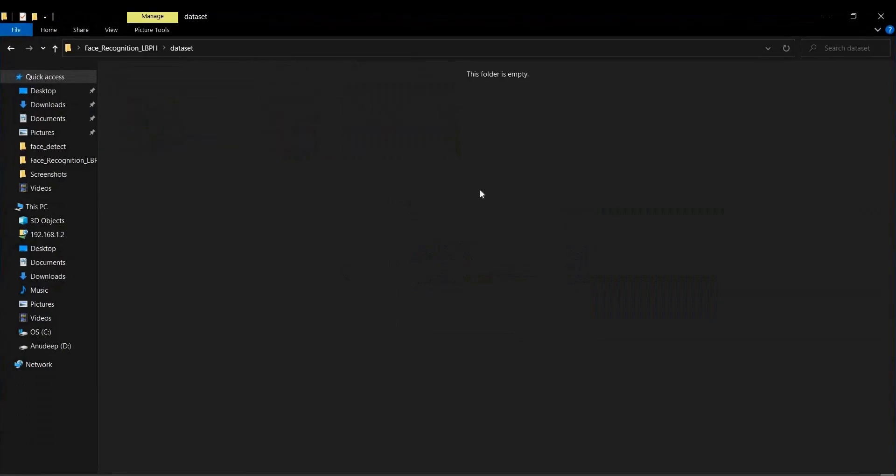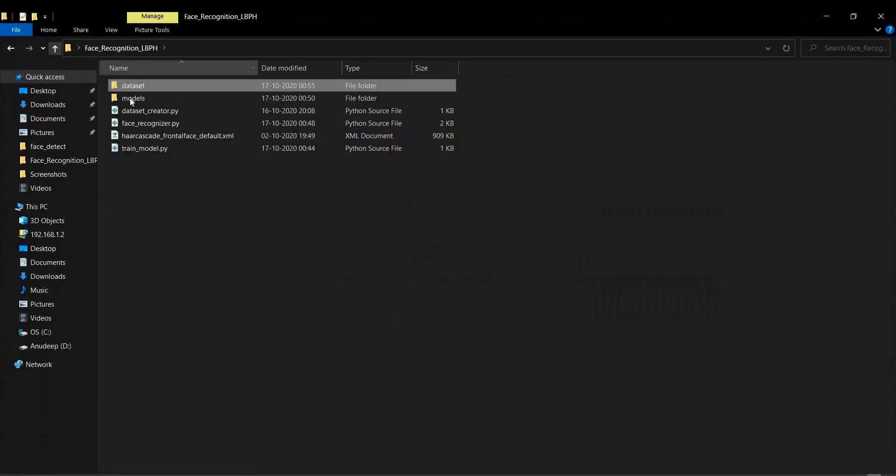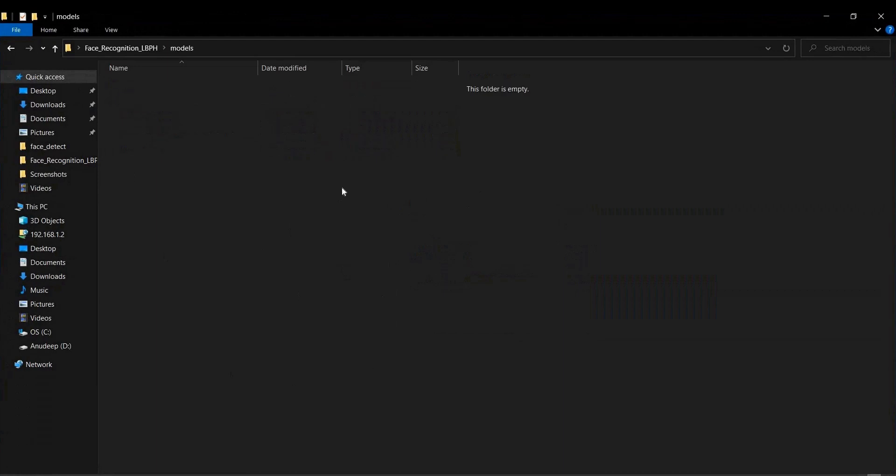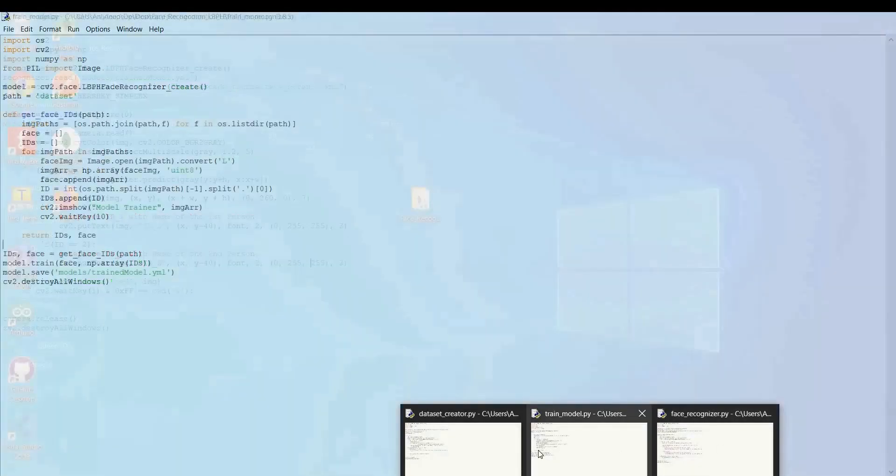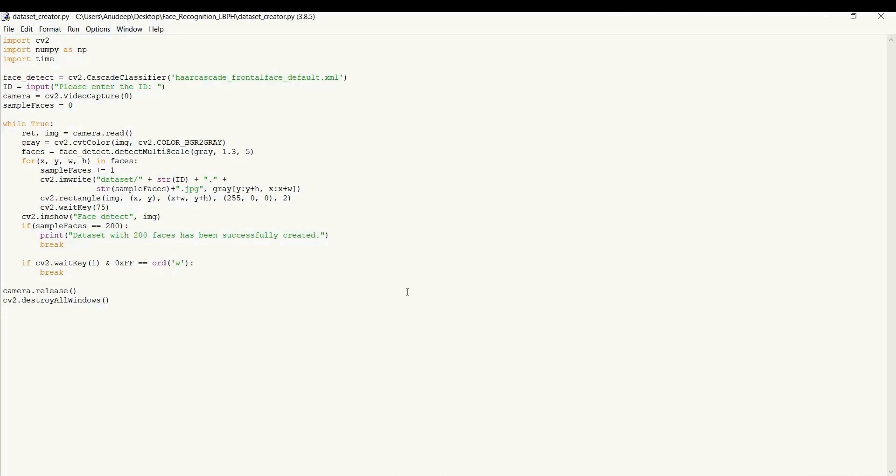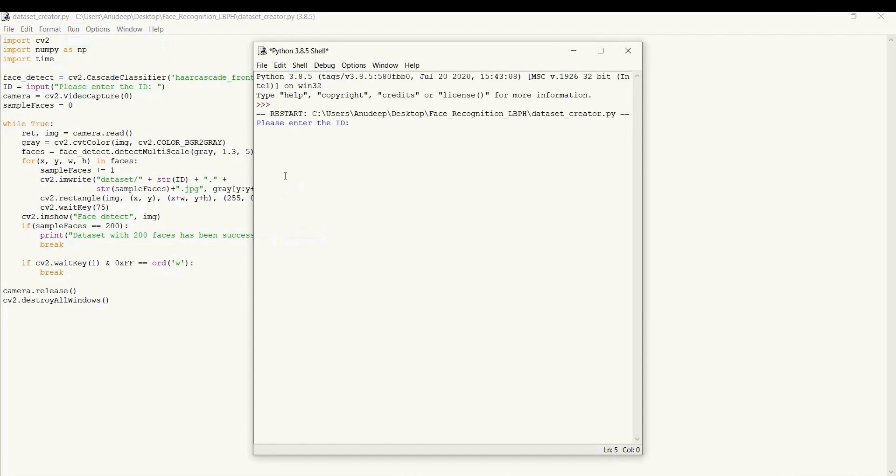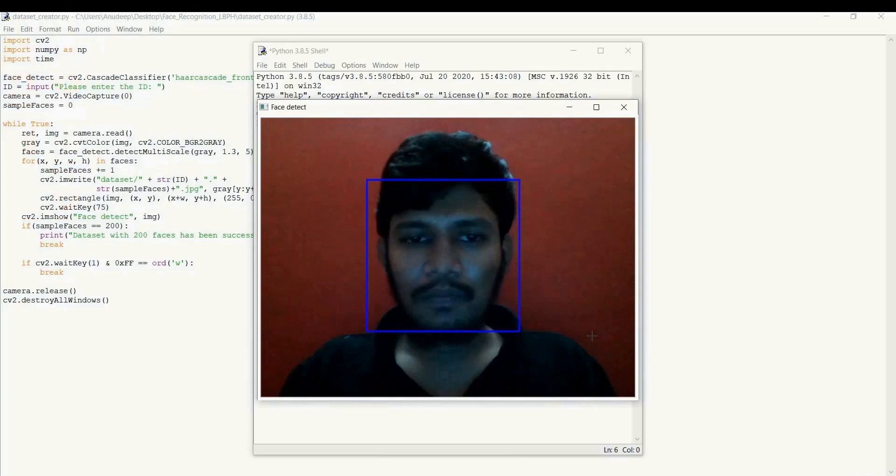Now when you open this directory, you can see that we have got a dataset and inside dataset there is nothing because we have not yet collected it. Models, there is nothing, the model is not yet generated. We are going to collect the dataset and we will generate the model while the process is midway through and we have got first step to collect the dataset where we need to run the file called dataset_creator.py and we are going to do that right now. Once you run it, you will be asked to enter the id and you can enter the id like 1, 2, 3, 4, something like that. Since we are the first person to test it, we are going to enter the id as 1 initially.